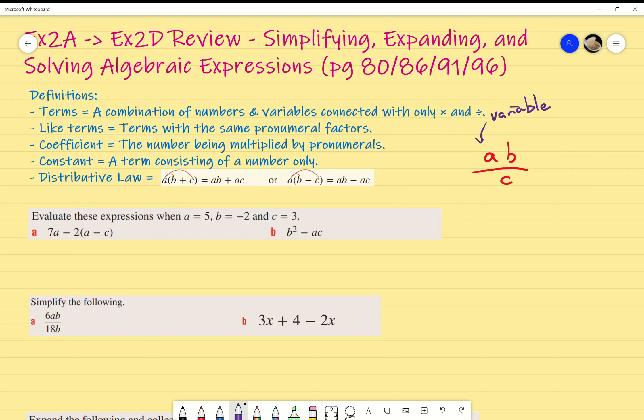Distributive law is just a fancy way of saying when you expand brackets, you need to multiply everything out. If I have A bracket B plus C, it's A times B and also A times C. You need to multiply every term by the term on the outside of the bracket.